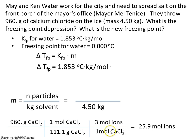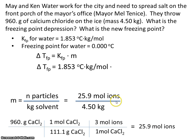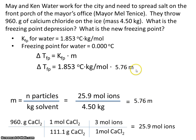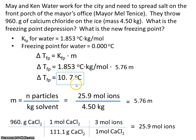So 960 grams of calcium chloride will be equal to 25.9 moles of ions. Now that we know how many moles of particles we have, we can plug that in for n. The molality of the solution will be 5.76 molar. Now that we know the molality, we can plug that in for m and multiply the two numbers together. This gives us our freezing point depression: 10.7 degrees Celsius. And remember, it's a depression — the freezing point is going to go down.